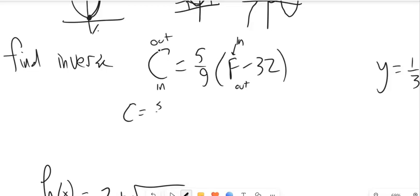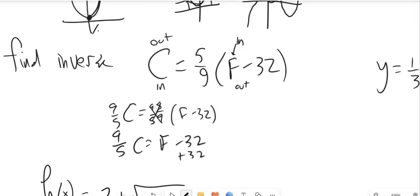So let's see. c equals 5 ninths, f minus 32. Well, I'm going to multiply both sides by 9 fifths. So now I've got 9 fifths c equals f minus 32. Add 32 to both sides.